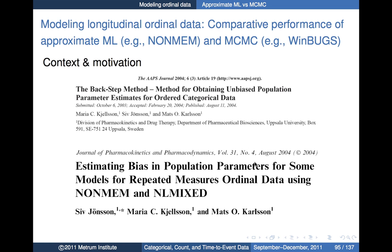There was some work that came out of Uppsala around 2004. The first article described bias occurring in population parameters when looking at repeated measures ordinal data using NONMEM and the SAS NLMIXED procedure. They found some serious biases, and that article proposed one strategy for trying to deal with it. Another article described a so-called back-step method to try and correct those biases.